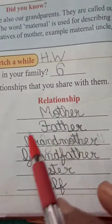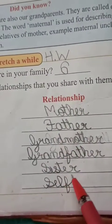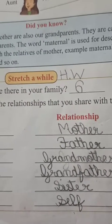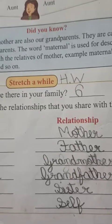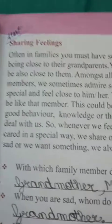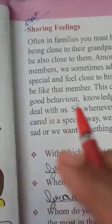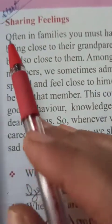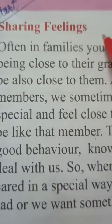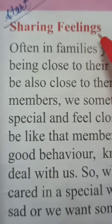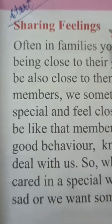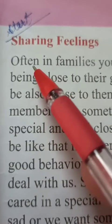Write the relationship of each family member with you. Okay, so children, up till here I taught you in the previous class. So let's start reading from the next page. They have written 'Sharing Feelings' — means sharing your feelings with your family members.